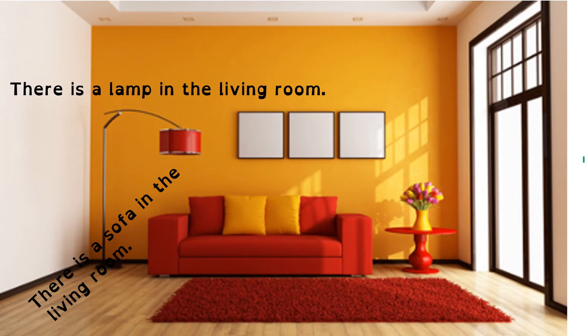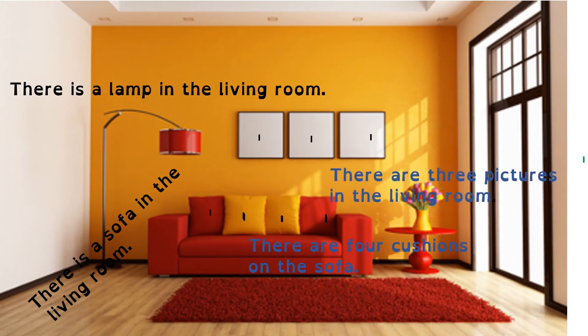Can you see the cushions? Let's count them out — one, two, three, four. How many cushions are there? There are four cushions on the sofa. And let's see the pictures. Is there one picture or more than one? More than one — very good. One, two and three pictures. So we say there are three pictures in the living room.